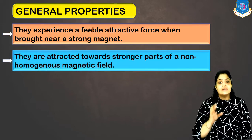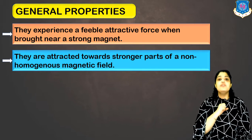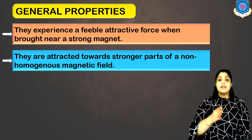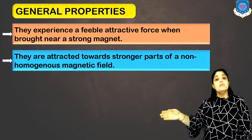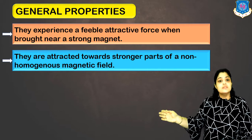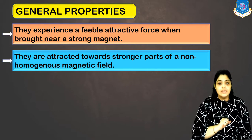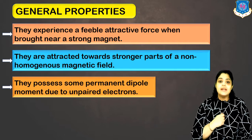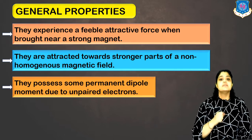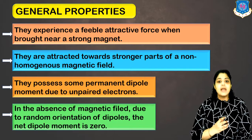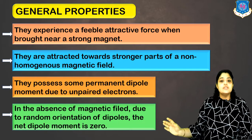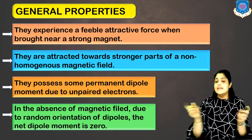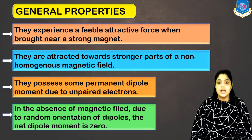They are always attracted towards the stronger parts of a non-uniform magnetic field. Unlike diamagnets which repel the stronger parts, they will be attracted towards the stronger parts of a non-uniform field. They possess some permanent dipoles due to the unpaired electrons. In the absence of magnetic field, due to random orientation of dipoles, the net dipole moment is zero — all dipoles cancel out each other.